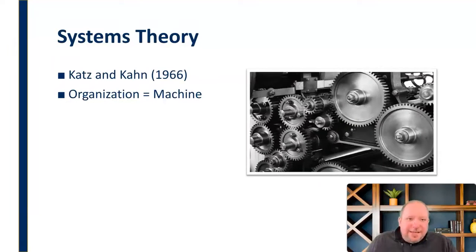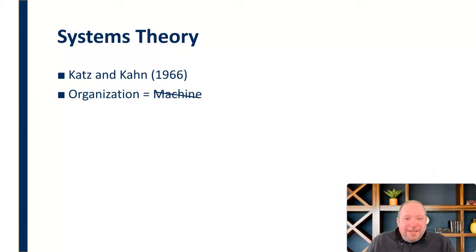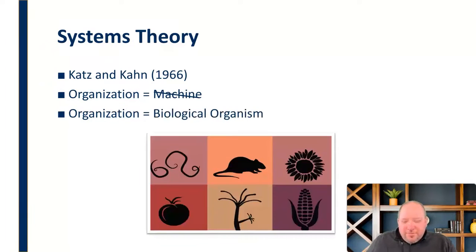Up to that point, organizations were seen as a machine, essentially almost in a literal sense. The people included were seen as a machine. But Katz and Kahn suggested that this did not accurately capture the dynamics of an organization.